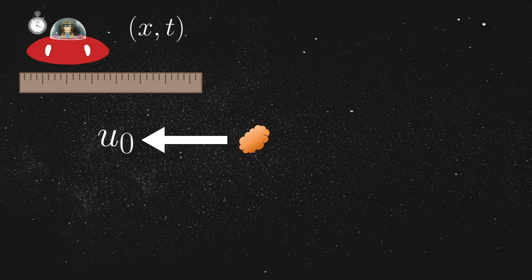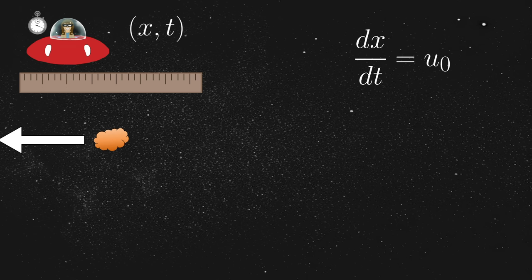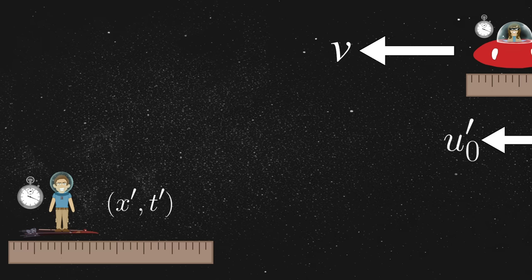Thus, using the language of calculus, we would say that the derivative of the rock's position x with respect to time t is equal to u sub 0. Now let's consider the same encounter from Jim's perspective. According to the law of inertia, Jim also observes the same rock moving along with some constant velocity.